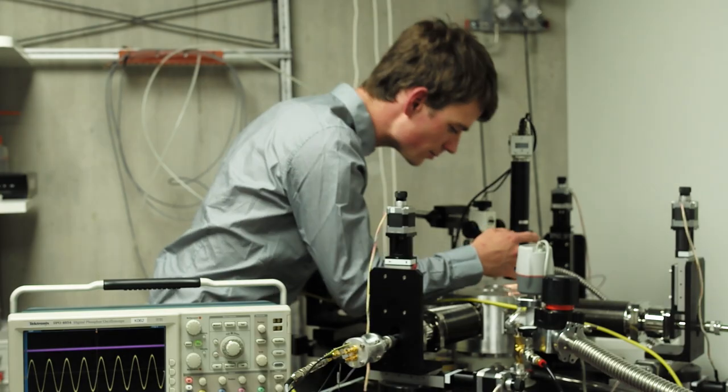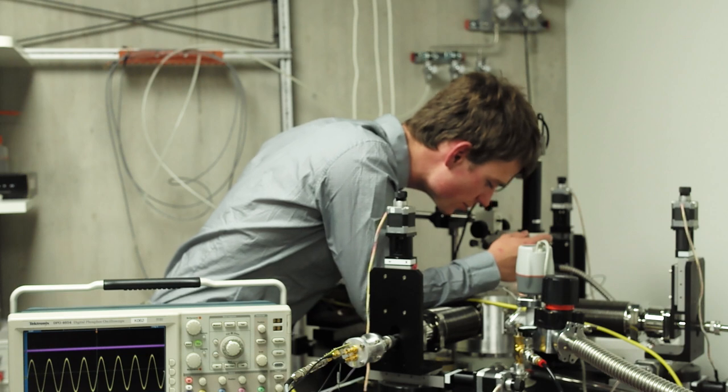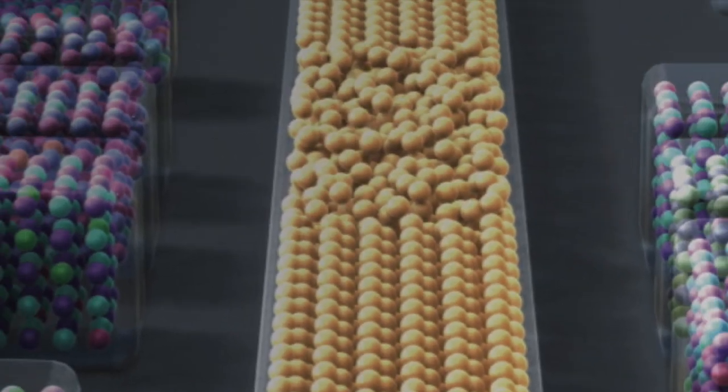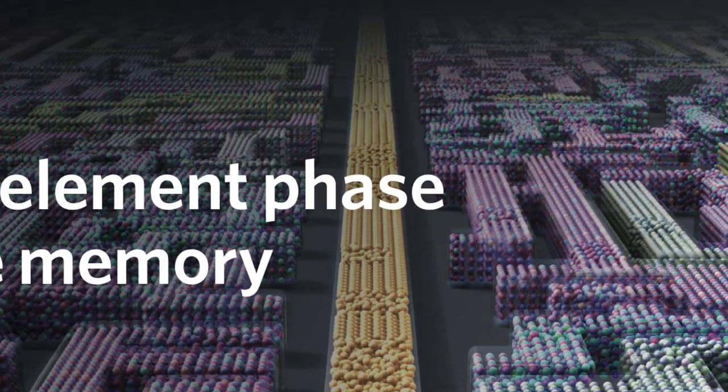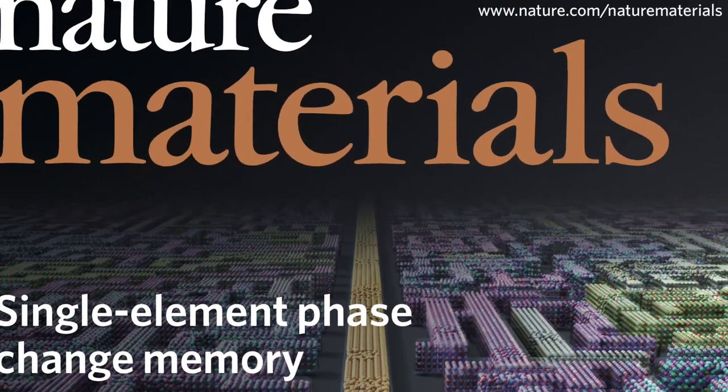We asked ourselves the question, what would be the simplest material we can think of? That would be a pure element. Our results, now published in Nature Materials, show that pure antimony can indeed be switched in a device structure between the crystalline and an amorphous state, and it shows similar characteristic properties like typical phase change materials.